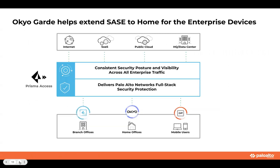The next feature is integrating with Okio, which will also be available as an add-on to Prisma Access. This would secure home printers and other enterprise and corporate devices, apart from just securing mobile users and remote networks, providing a complete SASE experience for enterprise users.